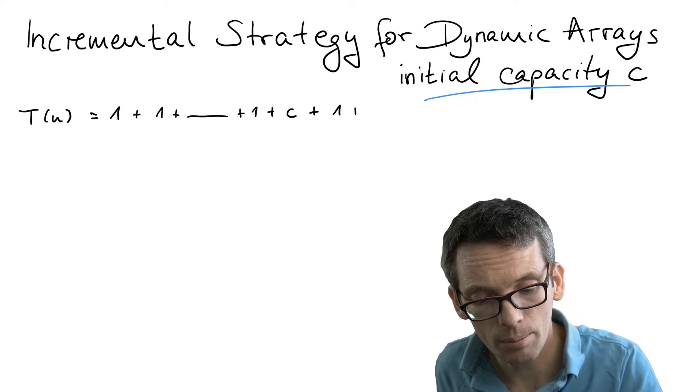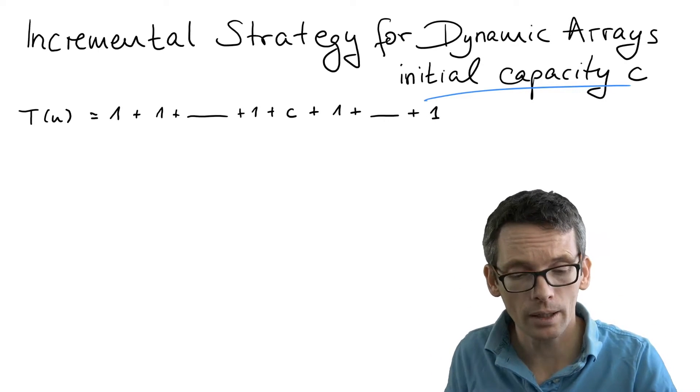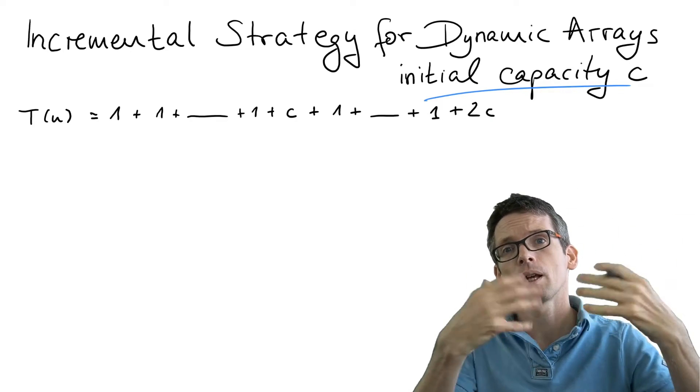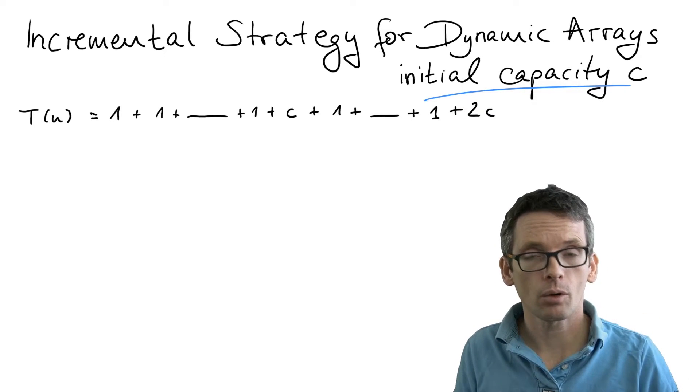Then we can do c push operations in constant time because we have the space. Then at 2c, we increment to a size of 3c, meaning we have to create an array of size 3c, copy the elements over, and so on.